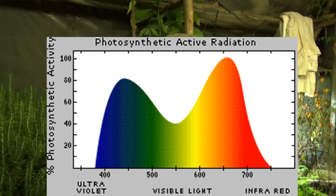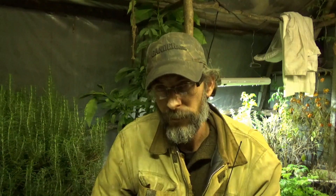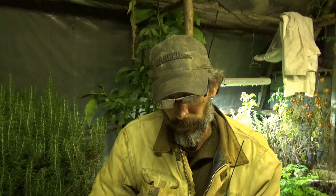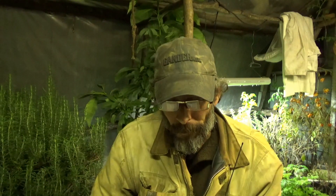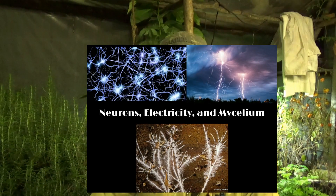Ultraviolet light has been shown to increase polyphenol production in plants — the essential oils and medicinal compounds plants make. Even in cannabis, research shows UV light improves that performance. There's a theory that more medicinal plants grown at higher altitudes are better because less atmosphere means more UV exposure. I don't know if anyone has confirmed that, but it's certainly interesting to consider.